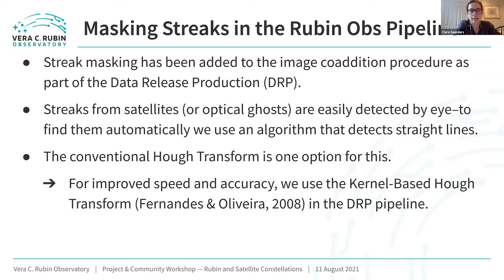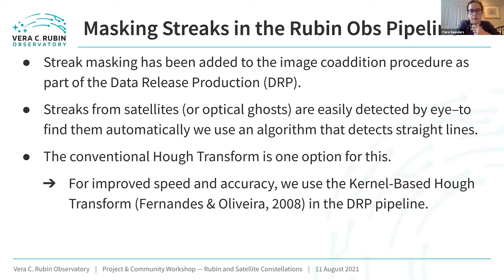What we've done is added a streak masking procedure in the coaddition process of the data release production. These streaks are very easily identified by eye. To find them automatically we're using an algorithm that just detects straight lines. A Hough transform is the conventional approach for doing this, but it is fairly slow and can be a little noisy. So to have improved speed and accuracy, we use something called the kernel-based Hough transform, which was proposed by Fernandez and Olivera back in 2008, and that's what we have implemented in the DRP pipeline.